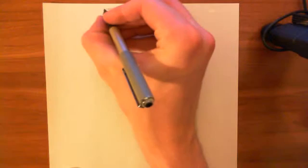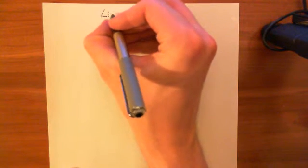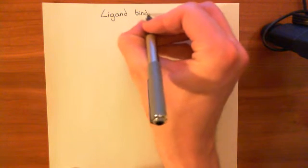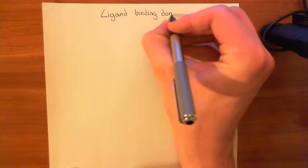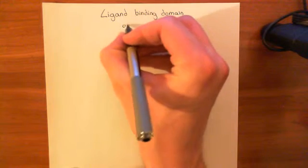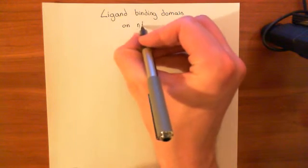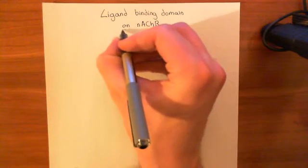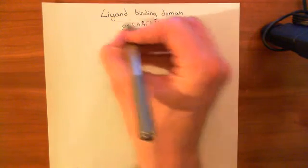Welcome to this next video in the playlist on CISLOOP ligand-gated ion channels. In this video, we're going to talk about the ligand-binding domain on nicotinic acetylcholine receptors. The structure of this video is: I'm going to firstly give a little bit of a discussion on nicotinic acetylcholine receptors and the structure of nicotinic acetylcholine receptors.